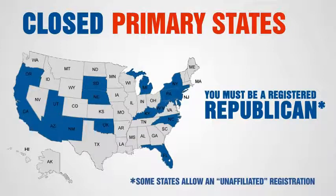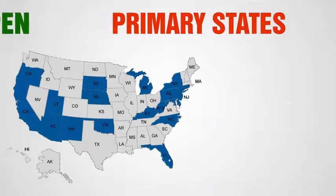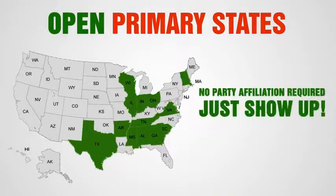In states with closed primaries, you will need to be registered as a Republican in order to vote for Ron Paul in the Republican primary. The deadlines to change your party affiliation to Republican differ from state to state, and some of these deadlines are many months before the primary. So if you live in one of these states, your most immediate concern should be changing your party affiliation to Republican — deadline dates can be found at BlueRepublican.org. If you live in an open or blanket primary state, you do not have to worry about party affiliation.